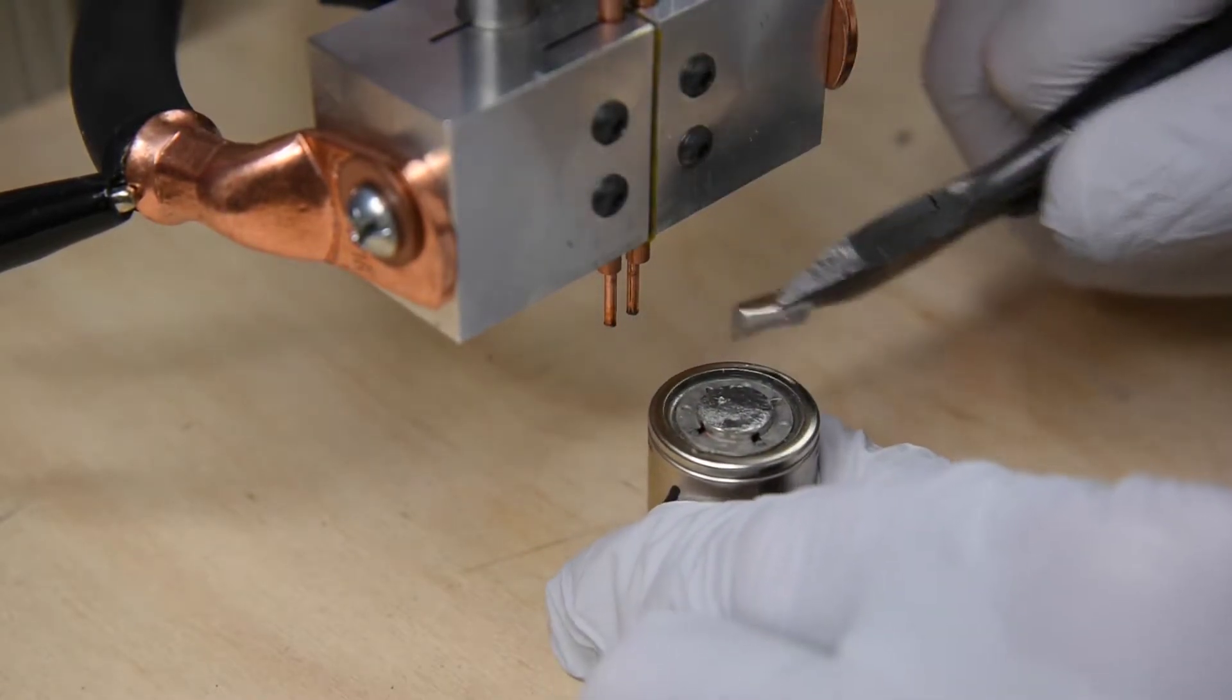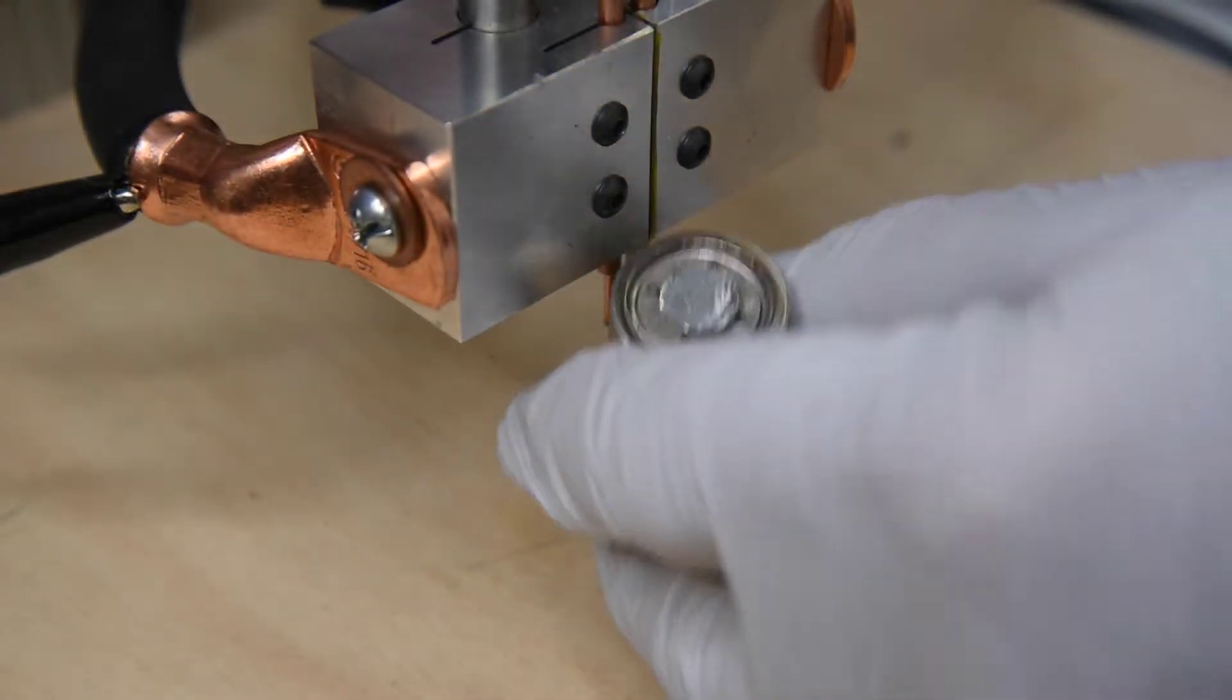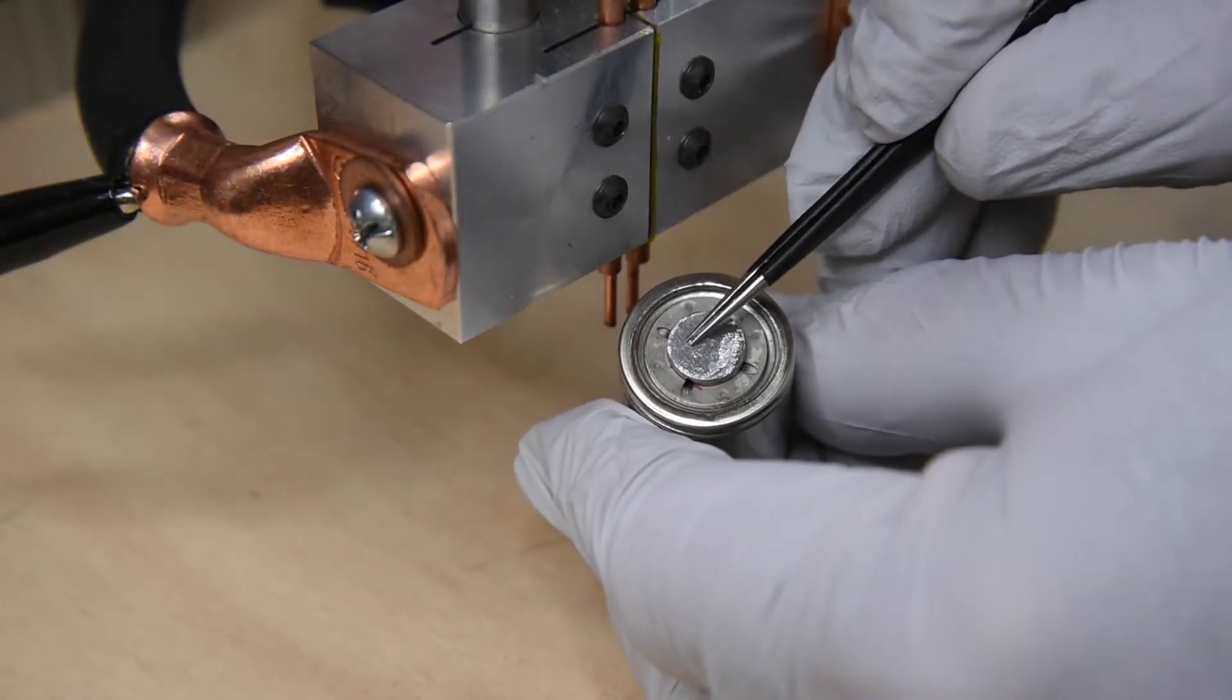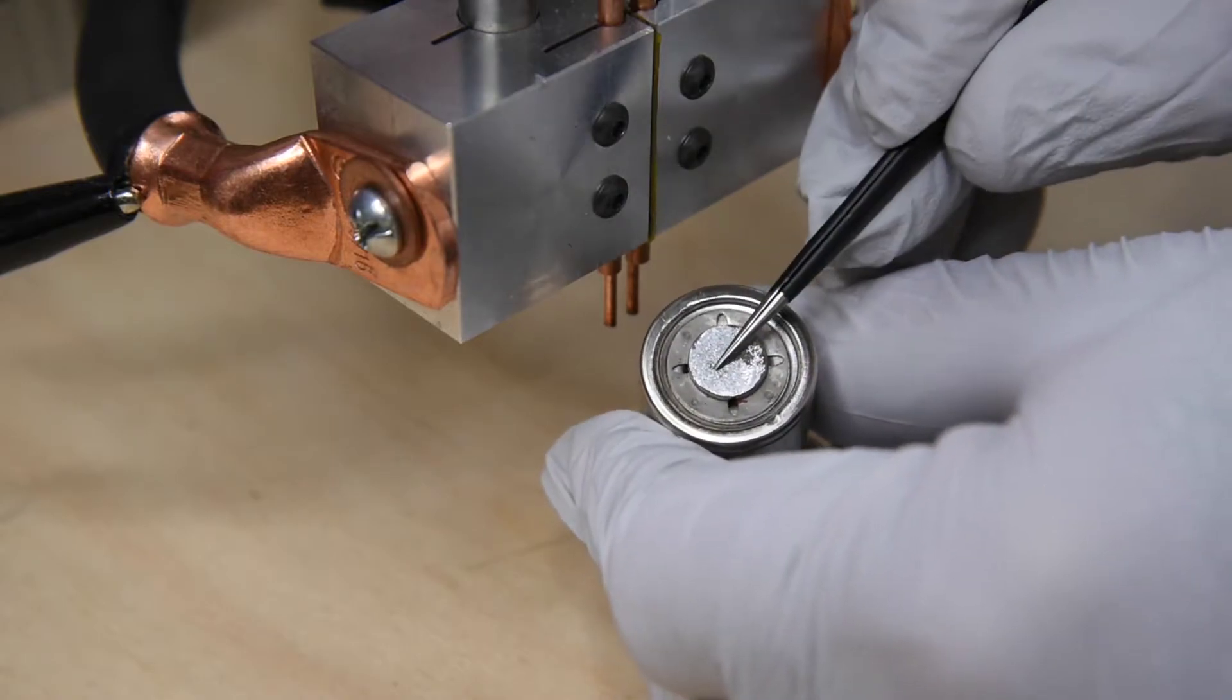There is a small weld nugget at one tip and there is a tiny burr on the nickel strip at the other tip, which accounts for why I could not pull it off by hand.